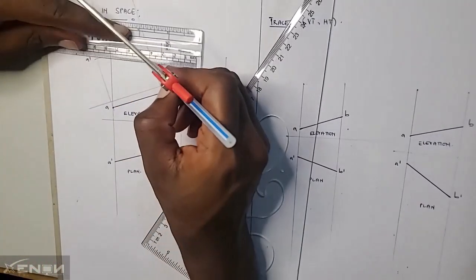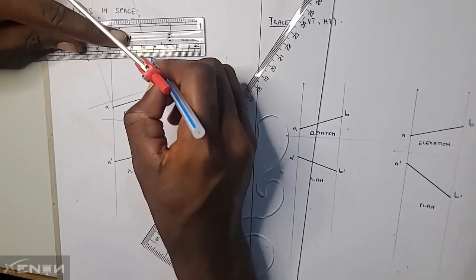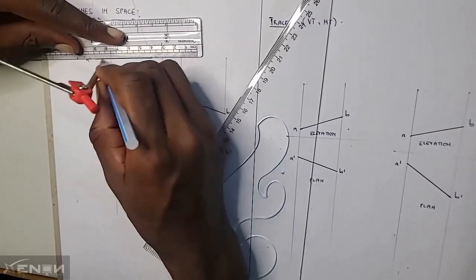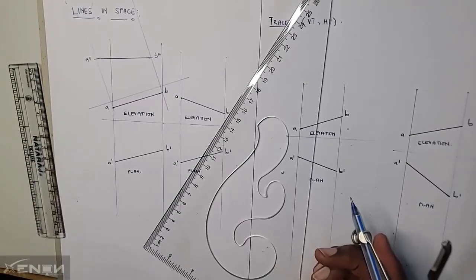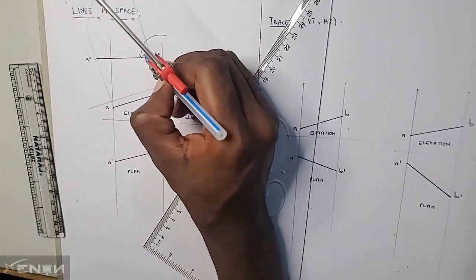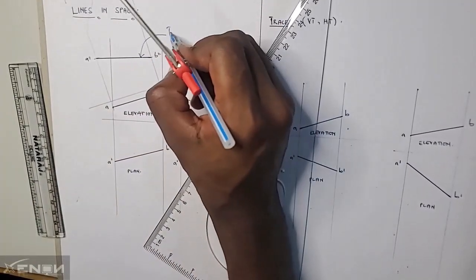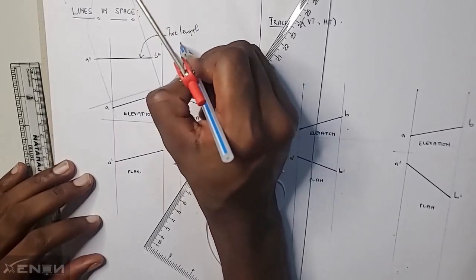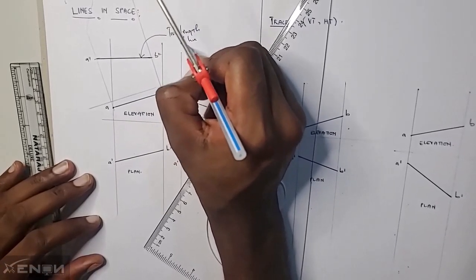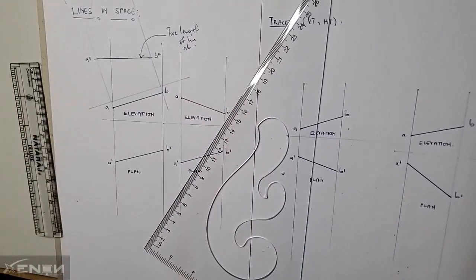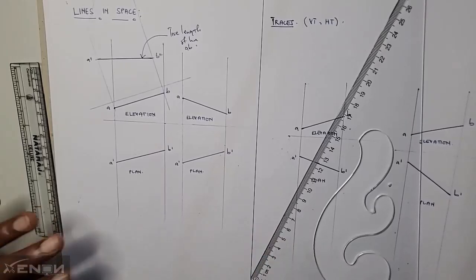When I join these two points, whatever I get is going to be the true length of that line. So this here is the true length of line AB. This is called the auxiliary method.